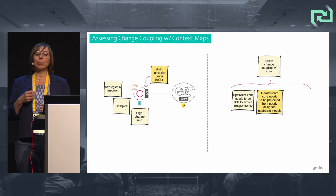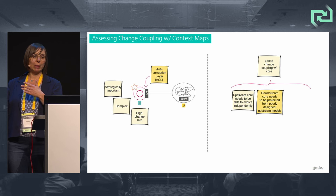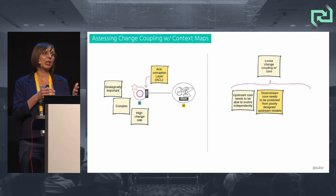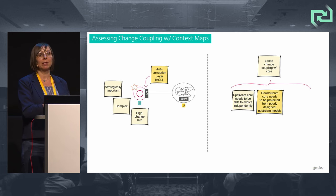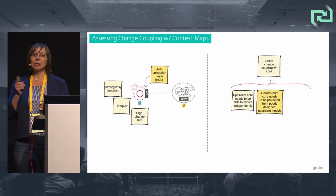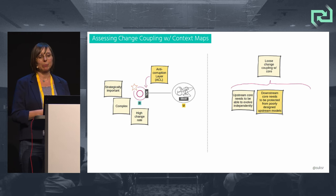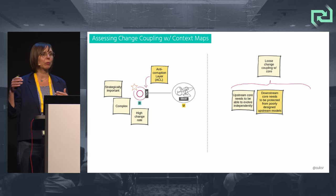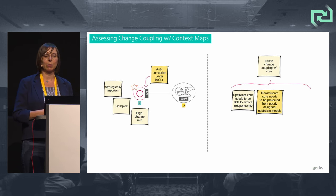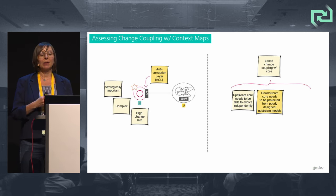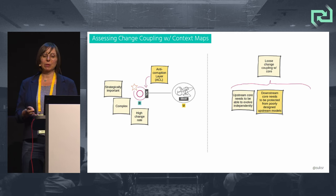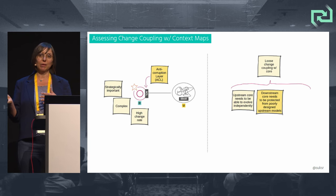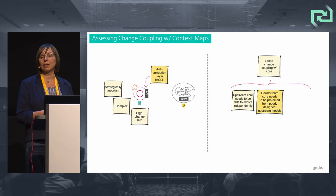When integrating with a poorly designed upstream model — for example, our big ball of mud — we need to protect against propagation of this messy model downstream, particularly to the core domain. An Anti-Corruption Layer, another context map pattern, helps translate the external upstream model into an internal downstream model and protects us from propagating a messy model into our domain logic. The anti-corruption layer keeps the business-critical part of the domain clear from external concepts not relevant for our context.